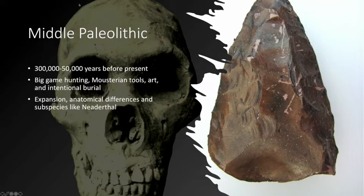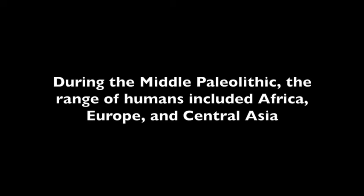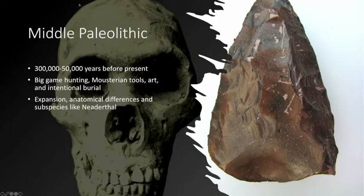We see that these are archaic Homo sapiens who bury their dead intentionally, unlike what we see with some of the earliest archaic Homo sapiens. The range of these archaic Homo sapiens is expanding. We are seeing anatomical differences and different kinds of subspecies in Homo sapiens, with a very small population divided from one another by significant geographical distance.